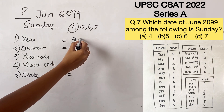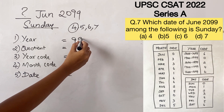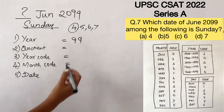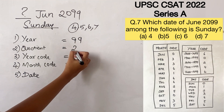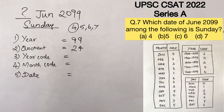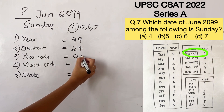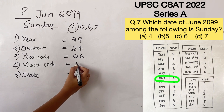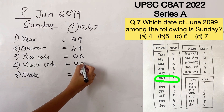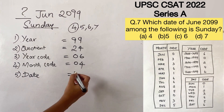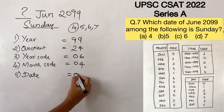Year: we fill it as 99, the last 2 digits. Quotient: when dividing 99 by 4, we get 24. Year code: please check the table — year code is 6. Month code: it's June, so month code is 4. Date: we are taking it as 4.